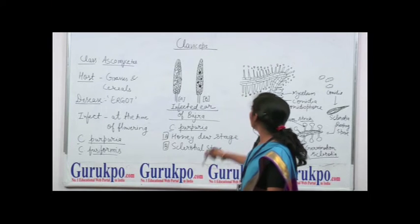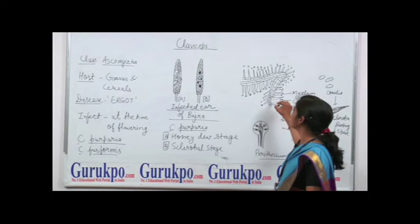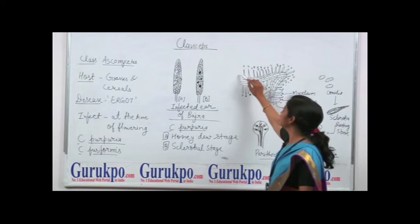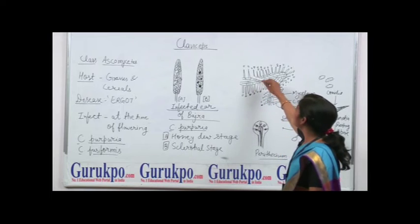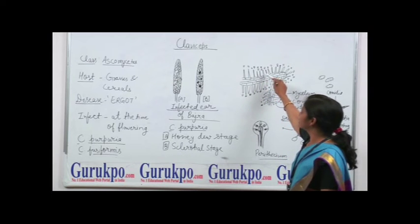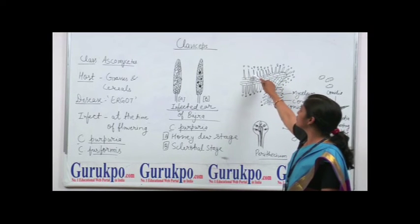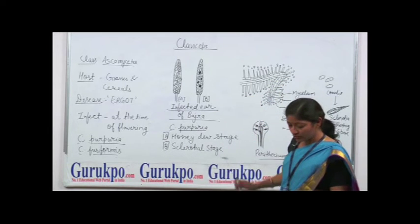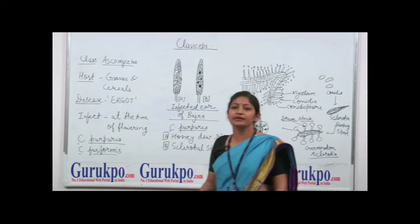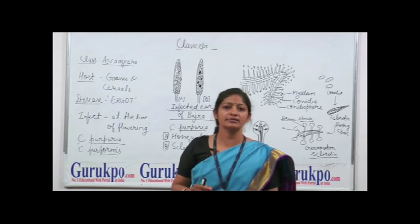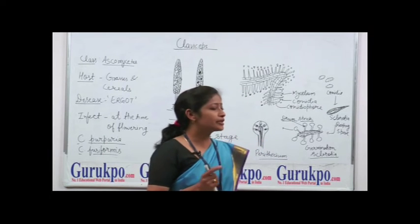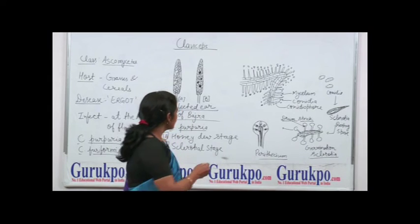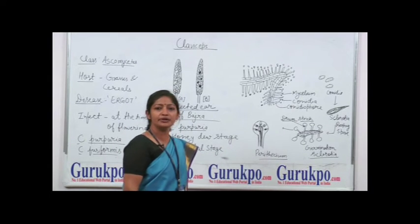This mycelium of the fungus covers the whole ovary. From this mycelium, conidiophores arise, on which ovoid-shaped conidia form. These conidia secrete sweet honey-like substances which attract the insects, and hence this stage is called the honeydew stage.